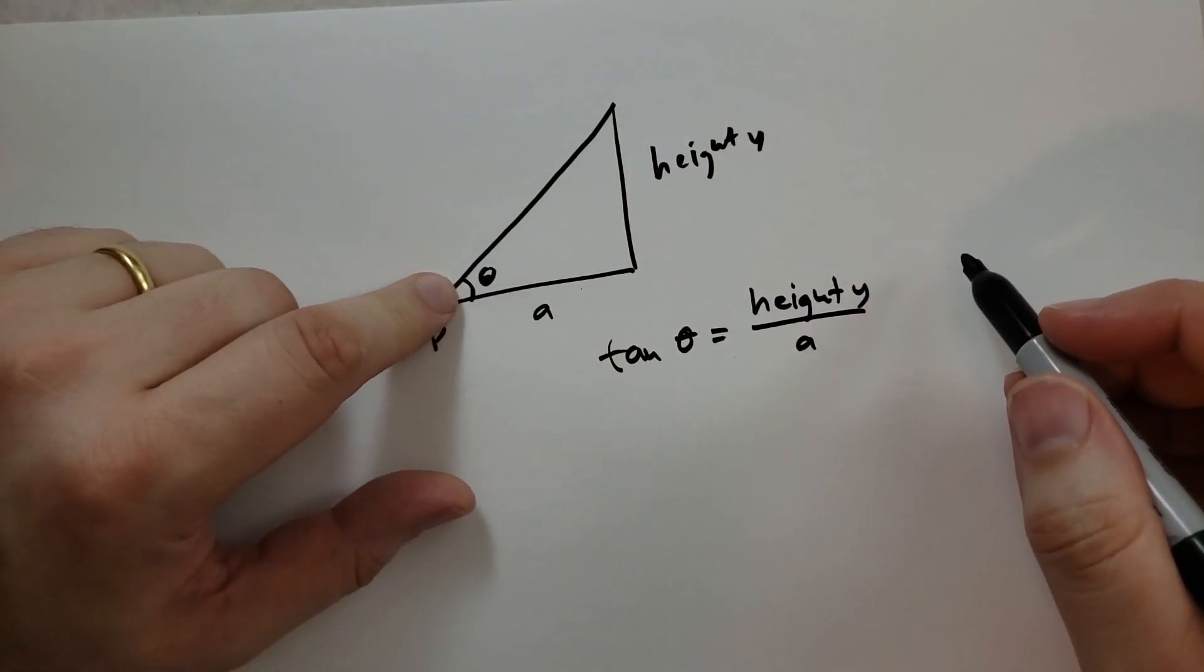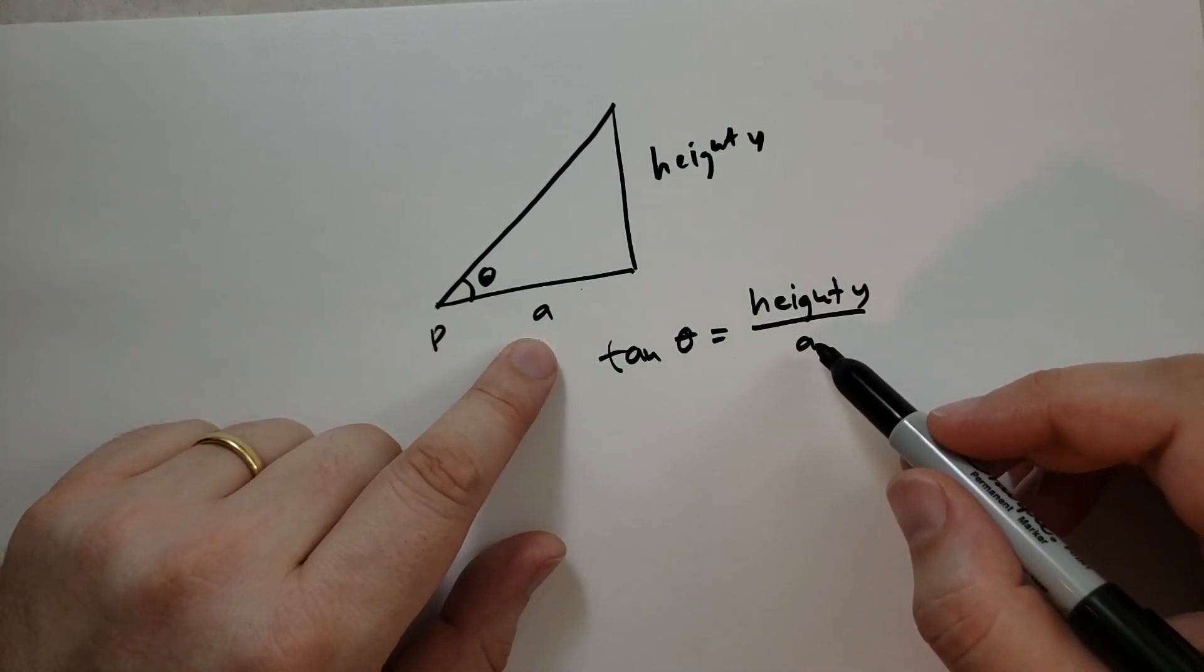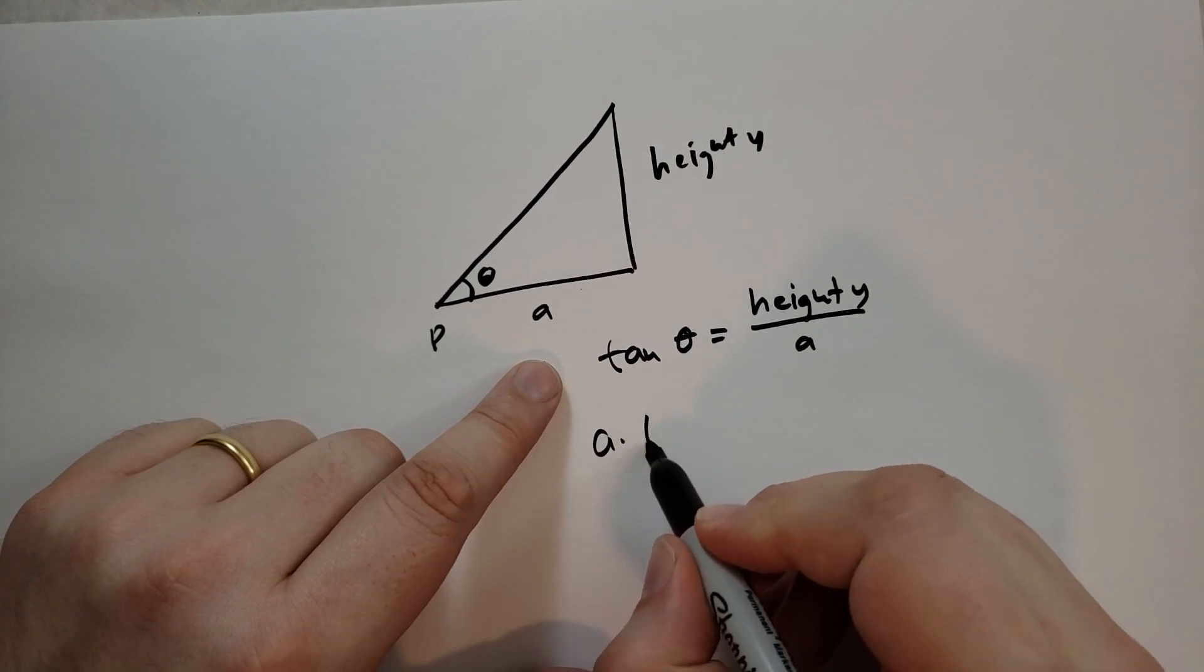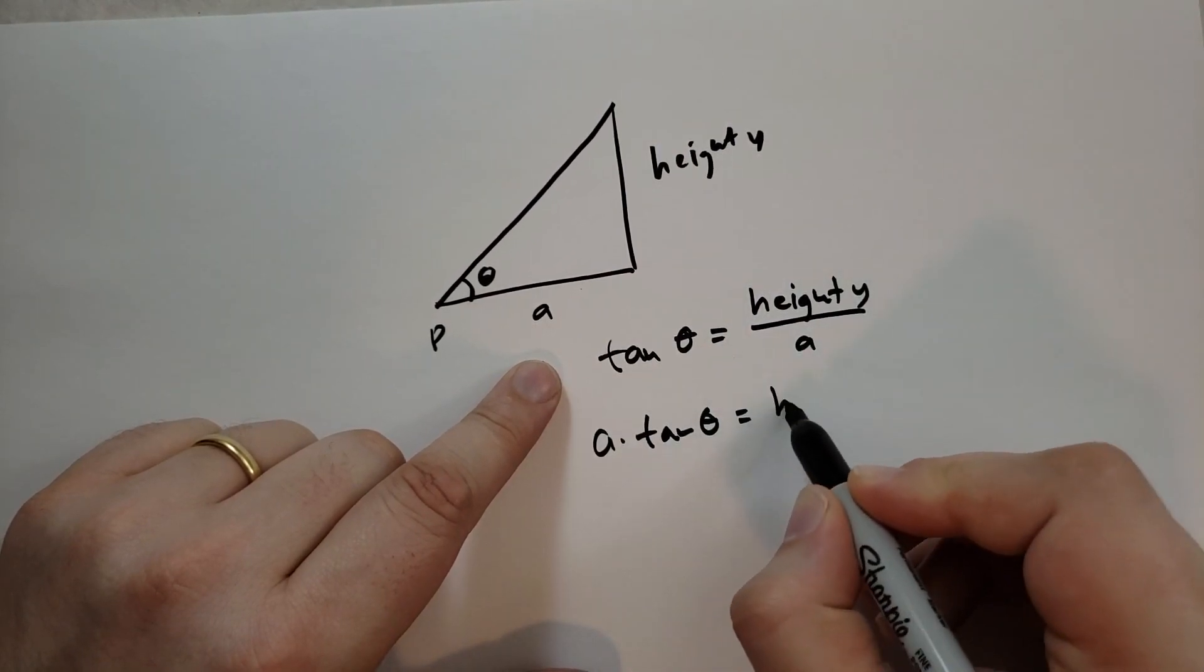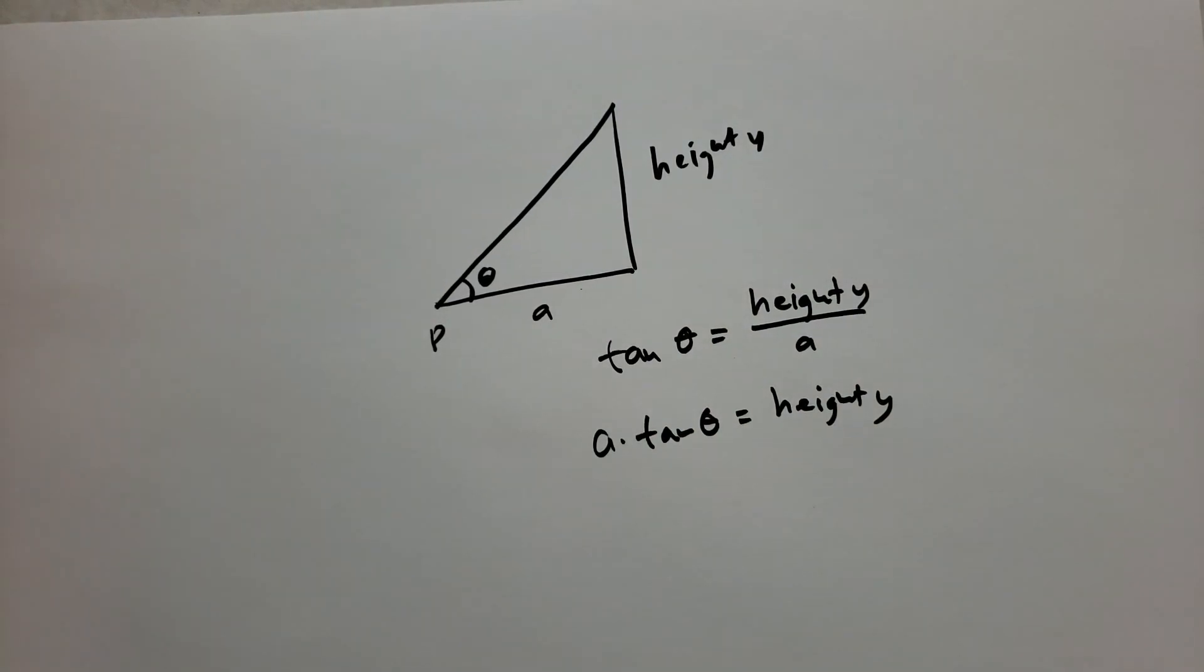So we can calculate what tangent of theta should be. And then we multiply it by A. So we have A times tangent of theta will actually give us the height Y. Pretty easy.